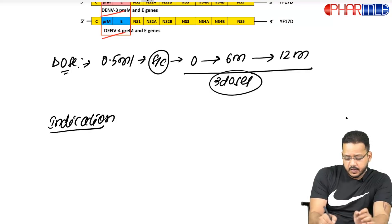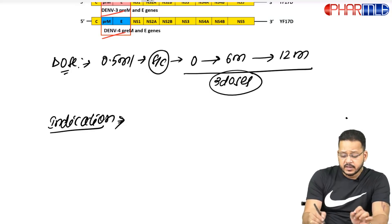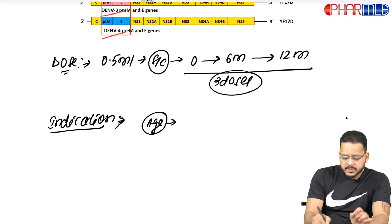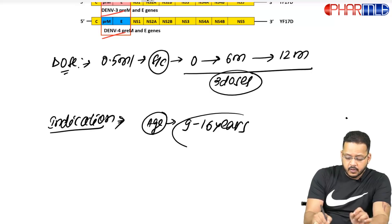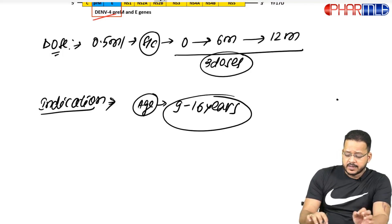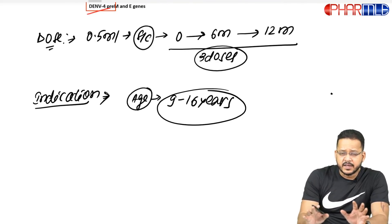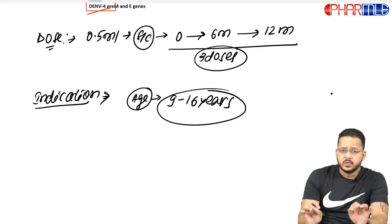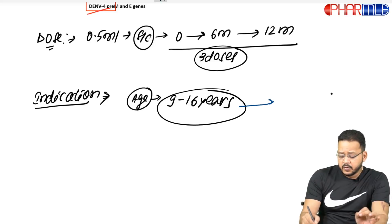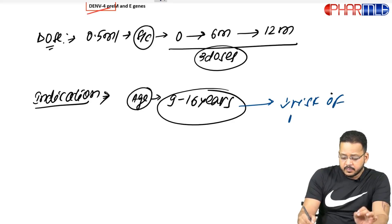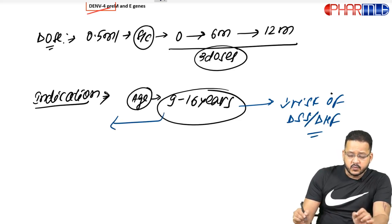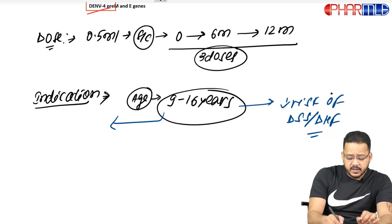The indication of this dengue vaccine — one important criterion is age. It is indicated in the age group of 9 to 16 years. The reason for this age group is that the main aim of this vaccine is to prevent or reduce the risk of severe dengue disease — that is dengue hemorrhagic fever or dengue shock syndrome. In adults beyond 16 years, there is a decreased risk of dengue shock syndrome or dengue hemorrhagic fever.